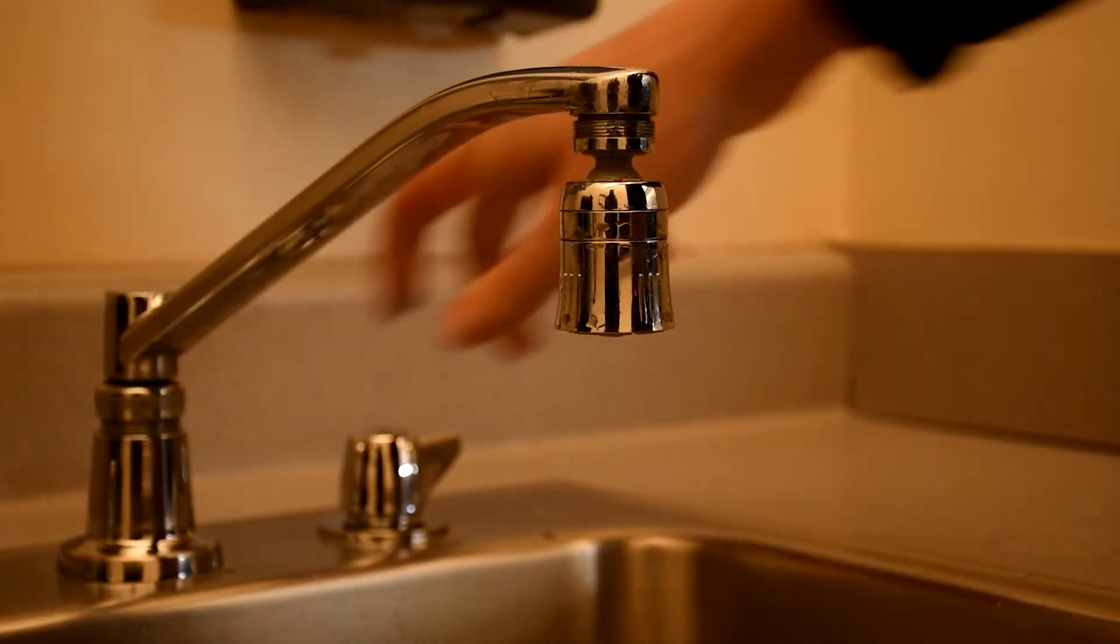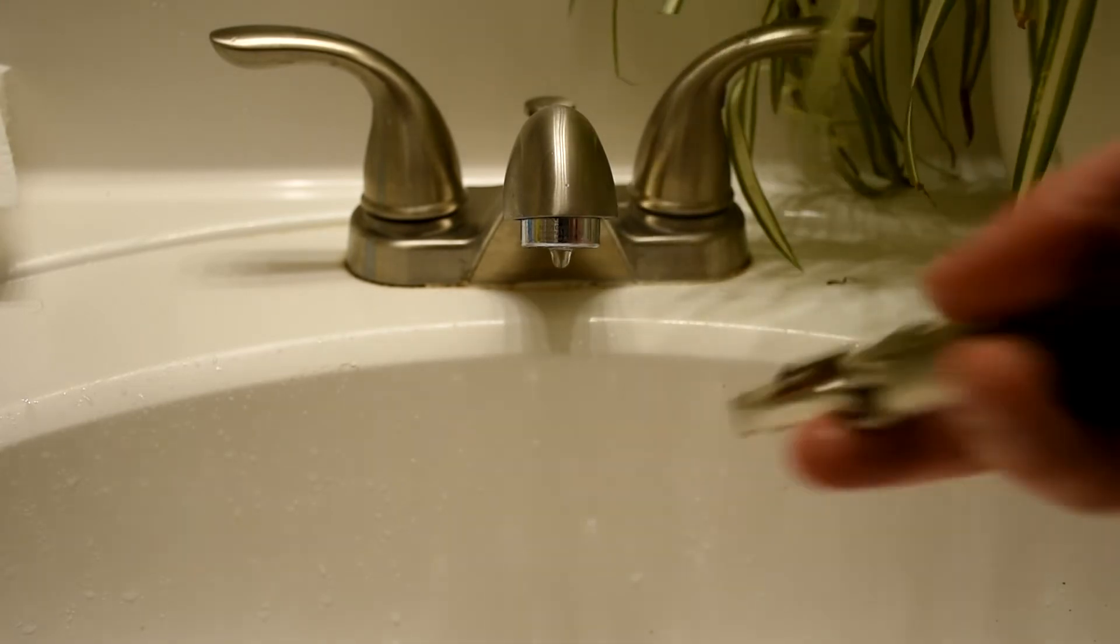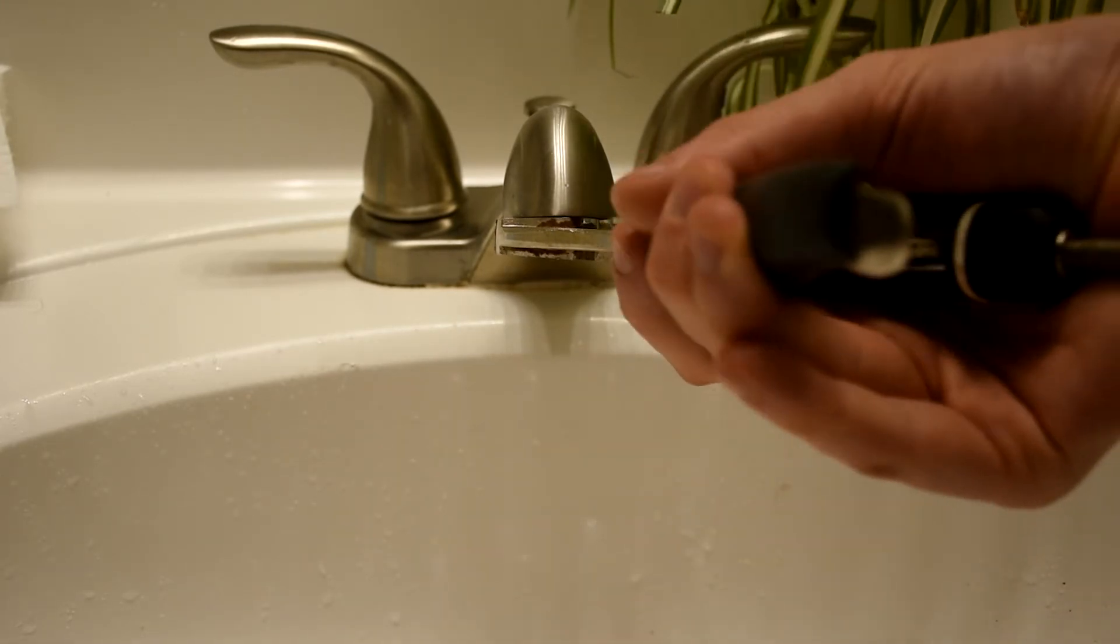After installation, make sure to test the faucet to ensure proper function. If there is leaking around the aerator, try tightening further. If this does not fix the issue, try a new rubber gasket.